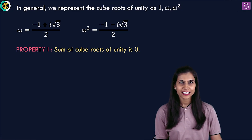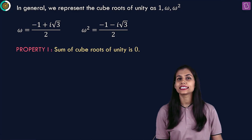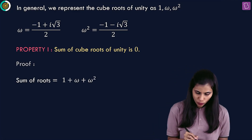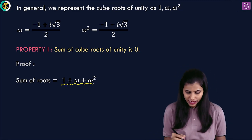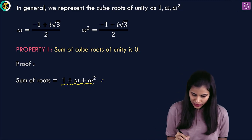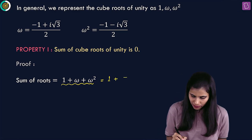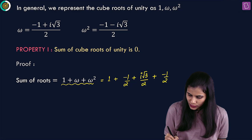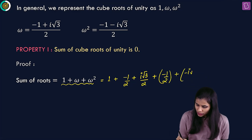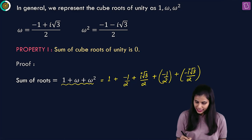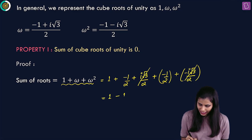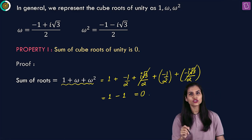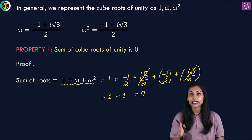The very first property says that the sum of all cube roots of unity is 0. When you add the cube roots, you get 1 plus omega plus omega squared. Plugging in explicit values: 1, plus minus 1 by 2 plus iota root 3 by 2, plus minus 1 by 2 minus iota root 3 by 2. The imaginary terms cancel, and you are left with 1 minus 1, which is 0. Hence proved — 1 plus omega plus omega squared is always equal to 0.